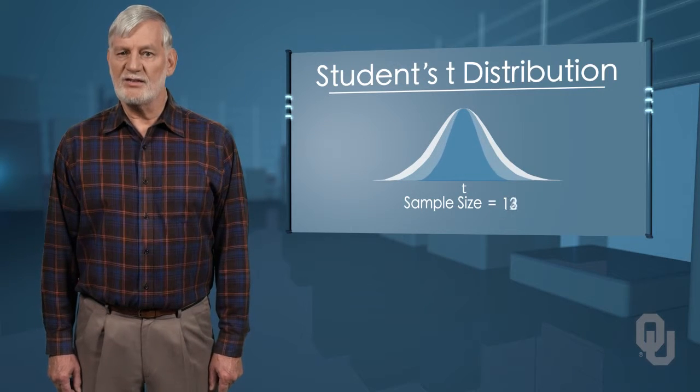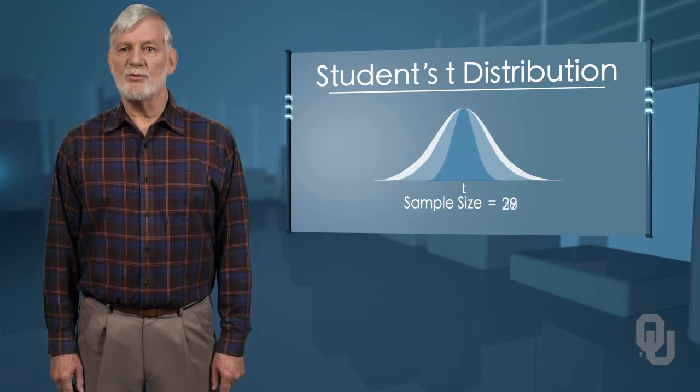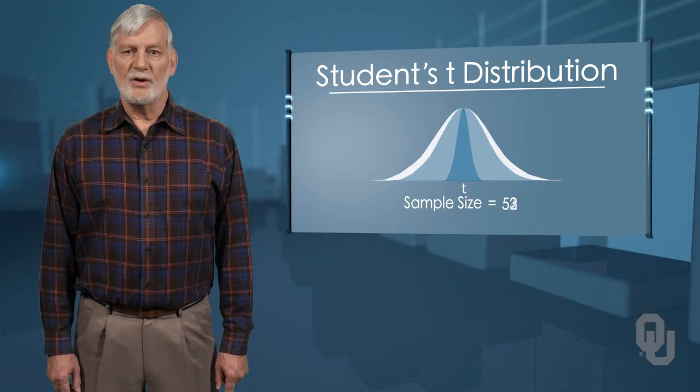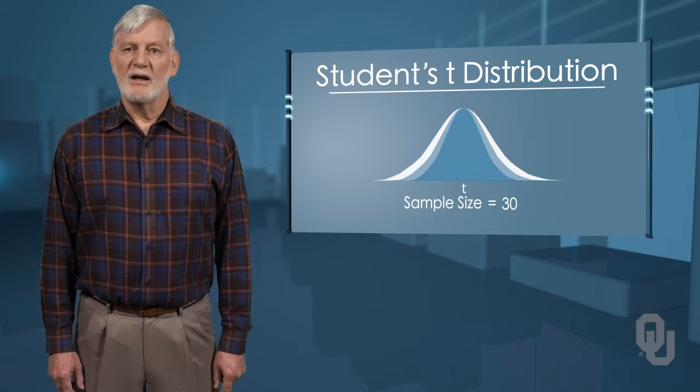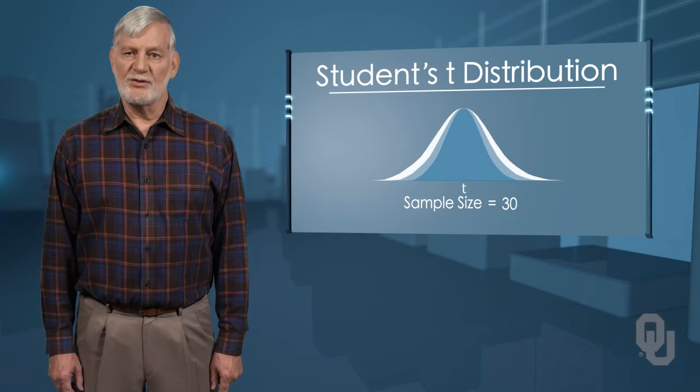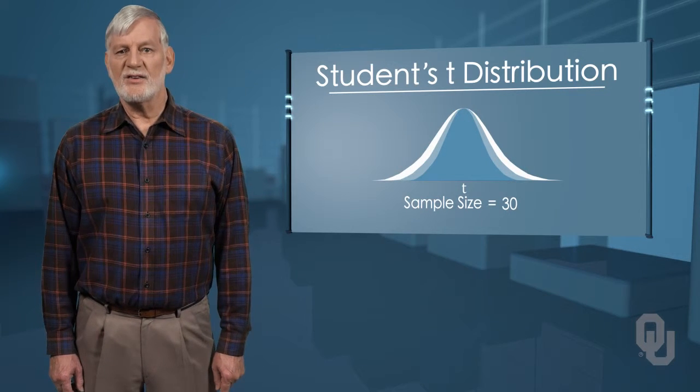As the sample size increases, the student's t-distribution becomes more and more like the normal distribution. When the sample size reaches 30, the normal distribution is usually substituted for the student's t because they are so much alike.